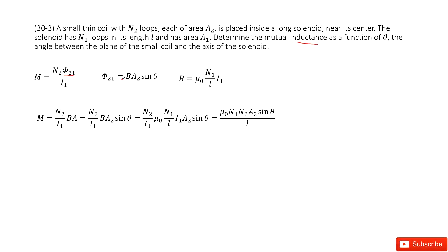The magnetic flux phi_21 is the magnetic field B times the cross-sectional area A2, times sin(theta), the angle between them. This magnetic field B comes from the first solenoid, so we write it as mu_naught * N1 * I1 / L. Now we substitute B in, and we can see that I1 cancels.